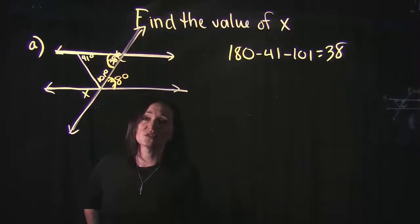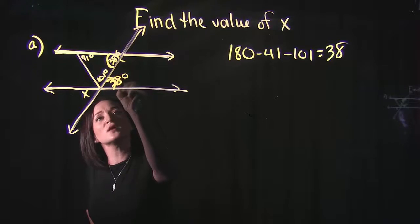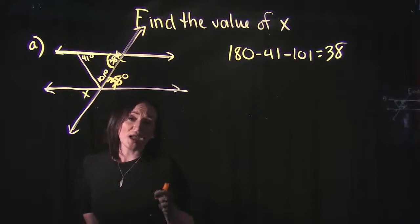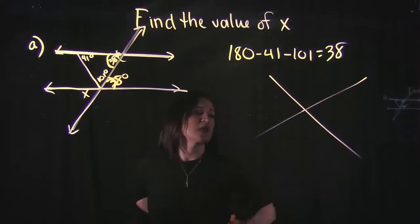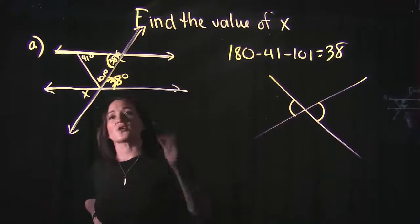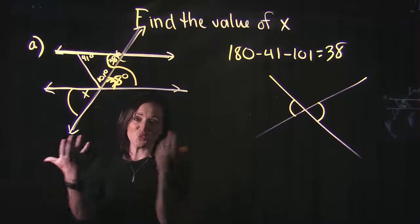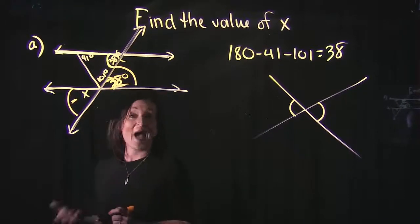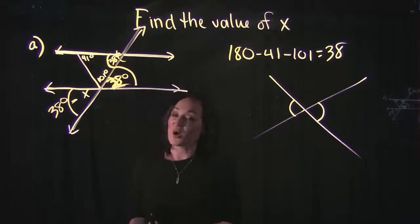Knowing that this angle is 38 degrees, we can now use the rule of vertical angles. Vertical angles are congruent — they form when any two lines intersect, and the angles opposite each other are equal. This angle is opposite X, which means X equals 38 degrees. That's all we needed to find for this problem.